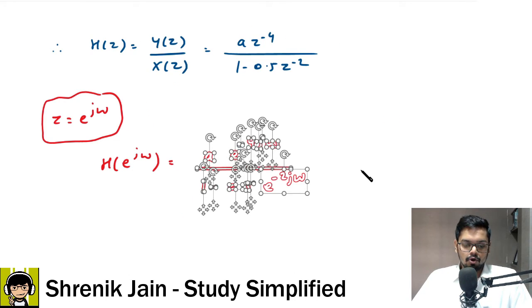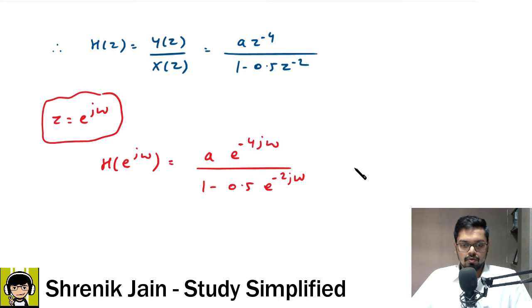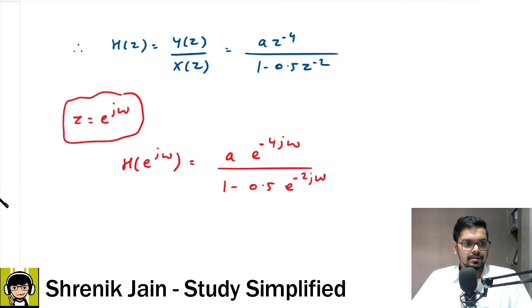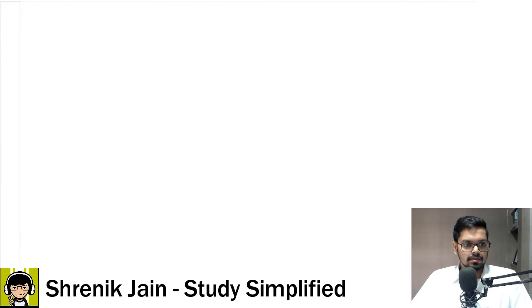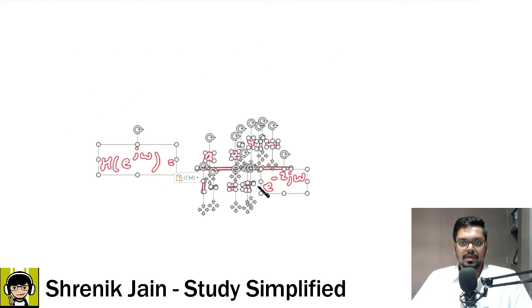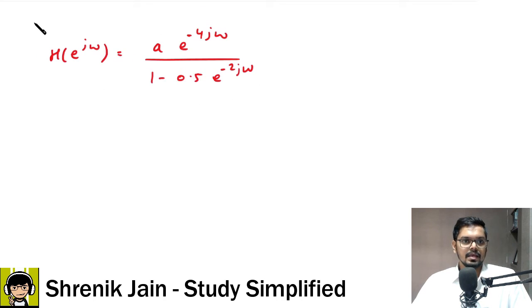Okay. So, if I do that z is e to the power j omega then we will get our transfer function in terms of omega which is a into z is changed as e to the power j omega. So, this player would be e to the power minus 4 j omega. Denominator we have 1 minus 0.5 e to the power minus 2 j omega. Understood? If understood then now what we are saying is mod of H of omega at omega is equal to pi by 2 is 0.5.